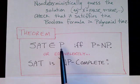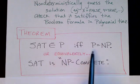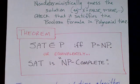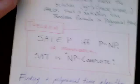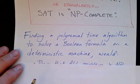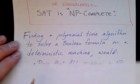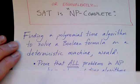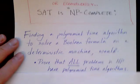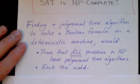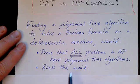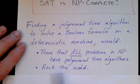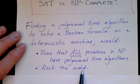So if we can find a polynomial time solution for SAT, then we have proven that P equals NP. And that's the theorem. Finding a polynomial time algorithm to solve a Boolean formula on a deterministic Turing machine would prove that all programs in NP have polynomial time algorithms. And of course, this would prove that P equals NP and that lots of problems that can't be solved in less than exponential time actually do have polynomial time solutions. And this would rock the world and make you instantly famous.